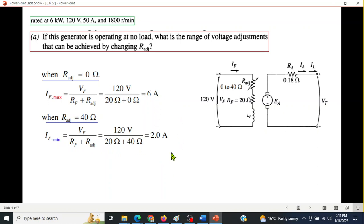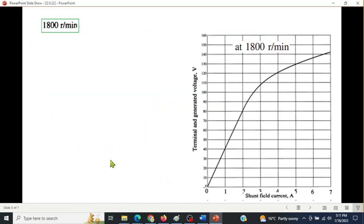Now for these two, maximum and minimum current, we have to find the output. Okay, so we will take help of the generator. This curve is drawn at 1800 RPM, and our machine is also operating at 1800 RPM.